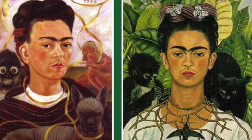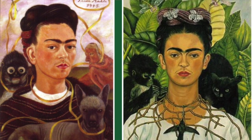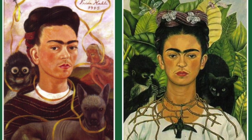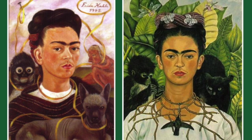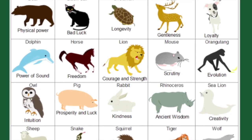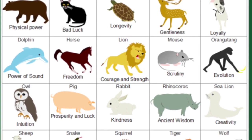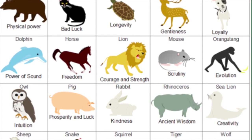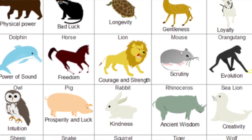She also uses animal symbolism — sometimes she has monkeys, dogs, sometimes birds. We're going to talk about what different types of animals can symbolize and see which one relates the most to you and your personality or your life. Then you're going to include your own animal in your self-portrait.